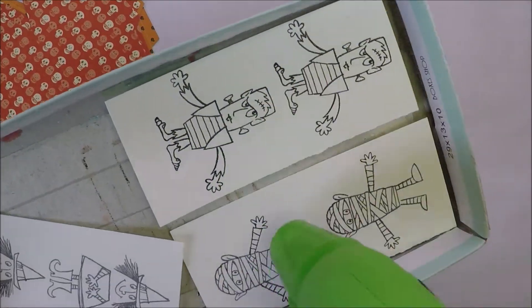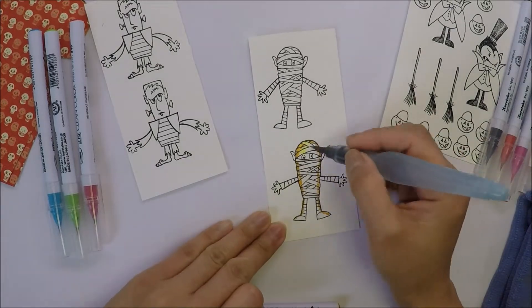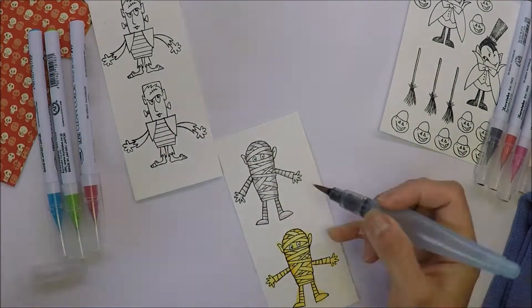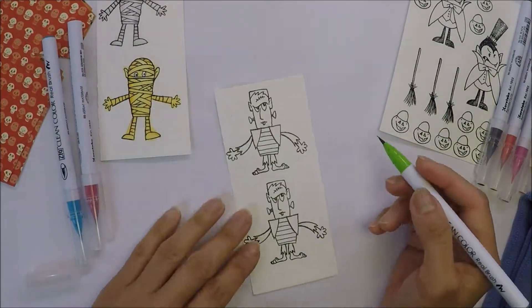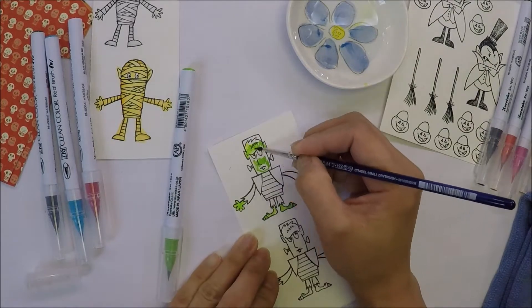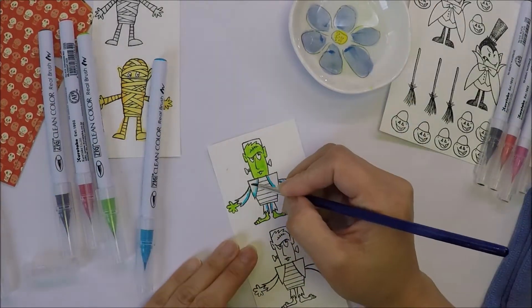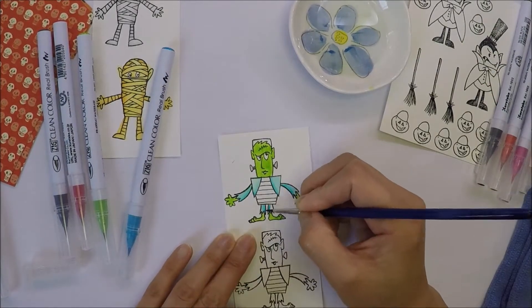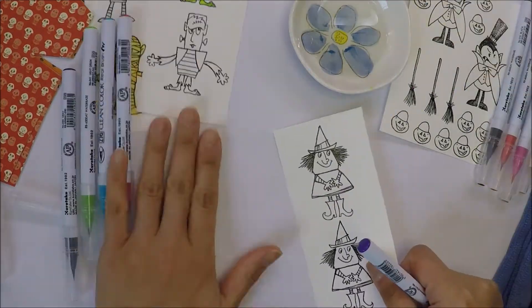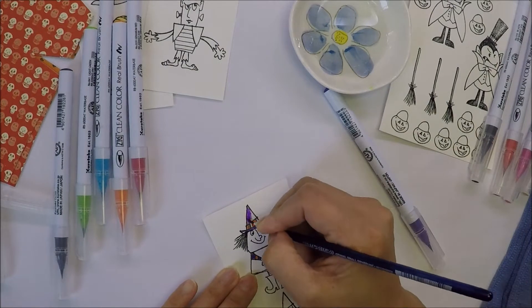After I'm done with the stamping, I will melt all the powder with my heat tool. I use my Zig Clean Color Real Brush Markers to color the images and just follow the colors of the images on the packaging. I love it when the images on the stamp packaging already have colors on them and that means you don't have to think what color to use. It will save you some time. As always, I will leave you some music here and I will be back when the coloring is done.